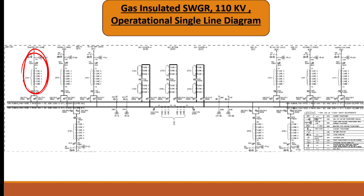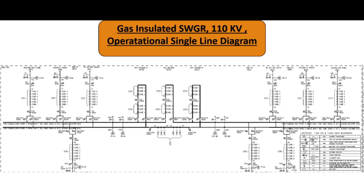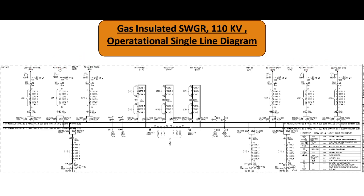One bay has one breaker. The main equipment of a bay is one breaker. The number of breakers and the number of bays are in most cases the same. So this single line diagram has six plus three plus three — twelve bays: six line feeders, three transformer feeders, two bus couplers, and one bus section.